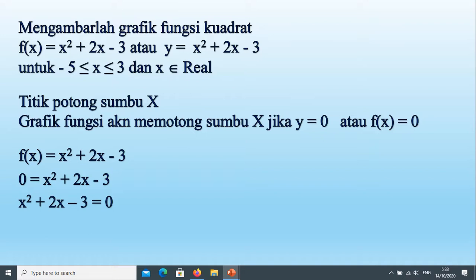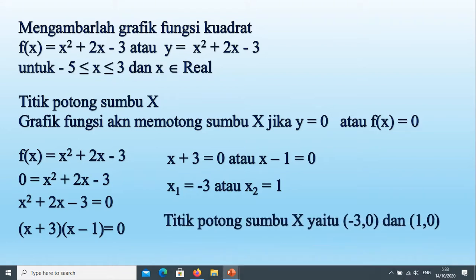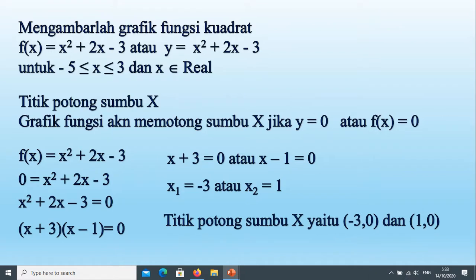0-nya kita taruh di sebelah kanan ya berarti kita bisa faktorkan, hasil kalinya negatif 3, jumlahnya positif 2 yaitu positif 3 dikali negatif 1. Maka nilai x1 nya yaitu negatif 3, nilai x2 nya yaitu positif 1. Maka titik potongnya yaitu (-3, 0) dan (1, 0).